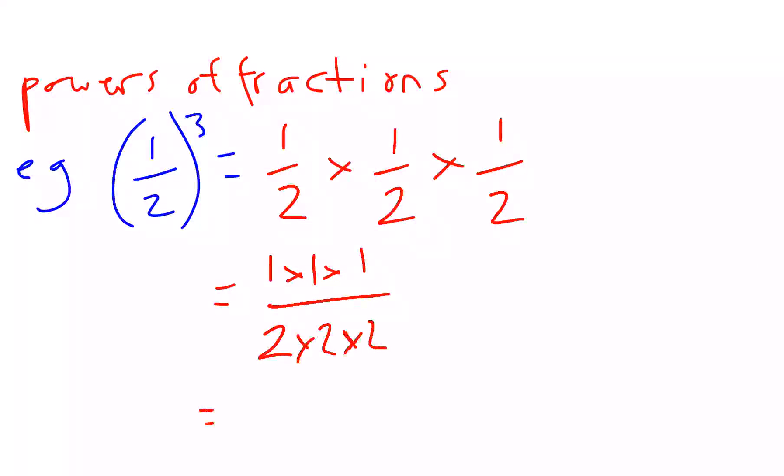1 times 1 times 1 is 1, but really that's 1 cubed. 2 times 2 times 2 is 2 cubed. If we wanted the answer, as I said, 1 times 1 times 1 is just 1, and we know 2 cubed is 8. So a half cubed is 1 over 8.